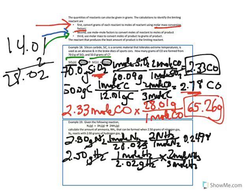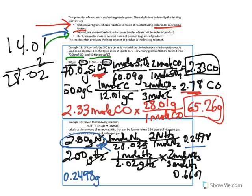For the nitrogen: 2.50 divided by 28.02 times 2 gives 0.2498 moles of NH3. For the hydrogen — note, that's 2.00 grams, not 2.50 — 2.00 divided by 2.02 times 2 divided by 3 gives 0.6601 moles of NH3. What's limiting us from making more is the nitrogen gas, so nitrogen is the limiting reactant. The smallest amount, 0.2498 moles, determines how much ammonia we can form.